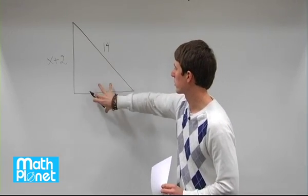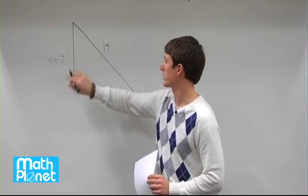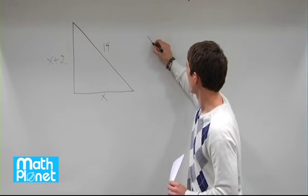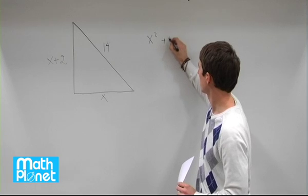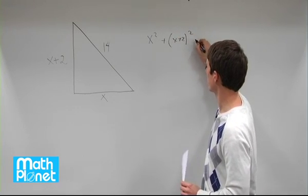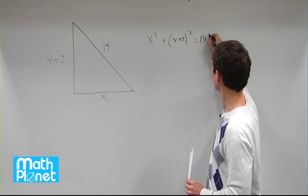So Pythagorean Theorem says the square of this side plus the square of this side equals the square of this side. So x squared plus quantity x plus 2 squared equals 14 squared.